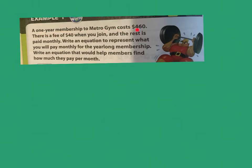A one-year membership to Metro Gym costs $460. There is a fee of $40 when you join and the rest is paid monthly. Write an equation to represent what you will pay monthly for a year-long membership. Write an equation that would help members find how much they pay per month. So we want an equation to represent what you will pay monthly for the year-long membership and an equation that would help members find how much they pay per one month. So then let's circle the information they gave us.